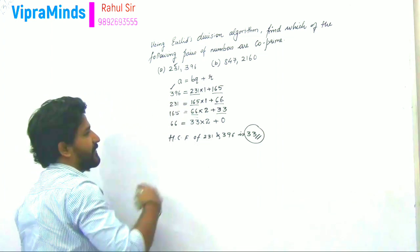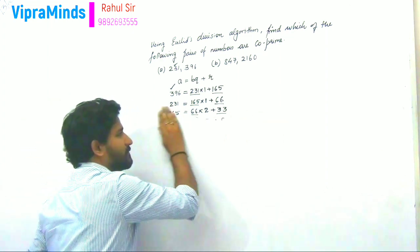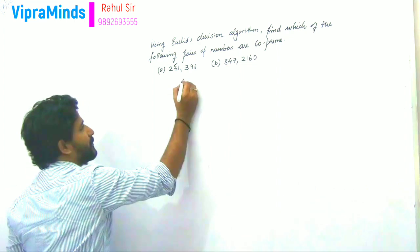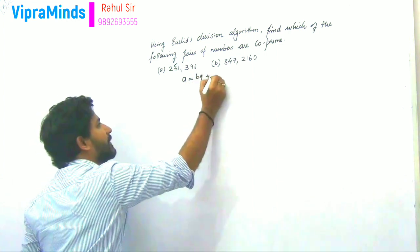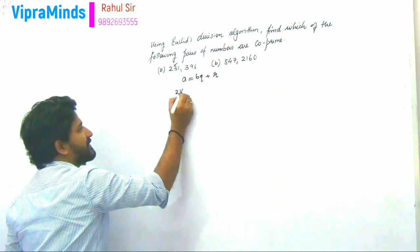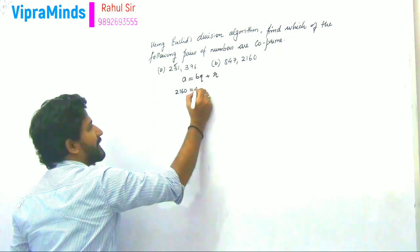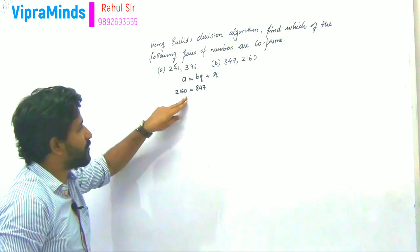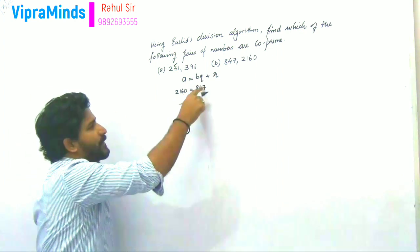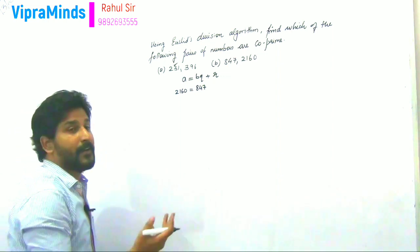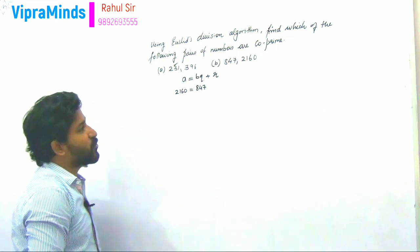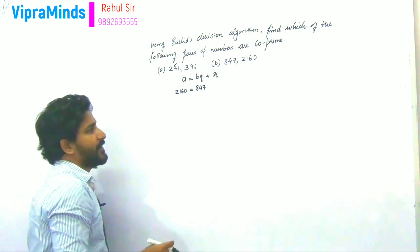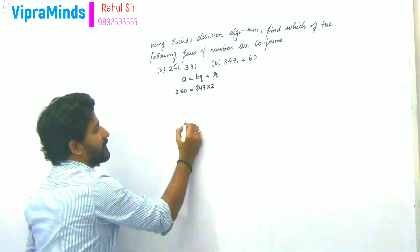Now let's start with the second example. Here the numbers are 2160 and 847. Since 2160 is greater, we write it in the format A = BQ + R: A is 2160, B is 847 (the divisor). Now 847 into 2 gives approximately 1694 — let's check: 800 into 2 is 1600 and 47 into 2 is 94, so 847 × 2 = 1694.